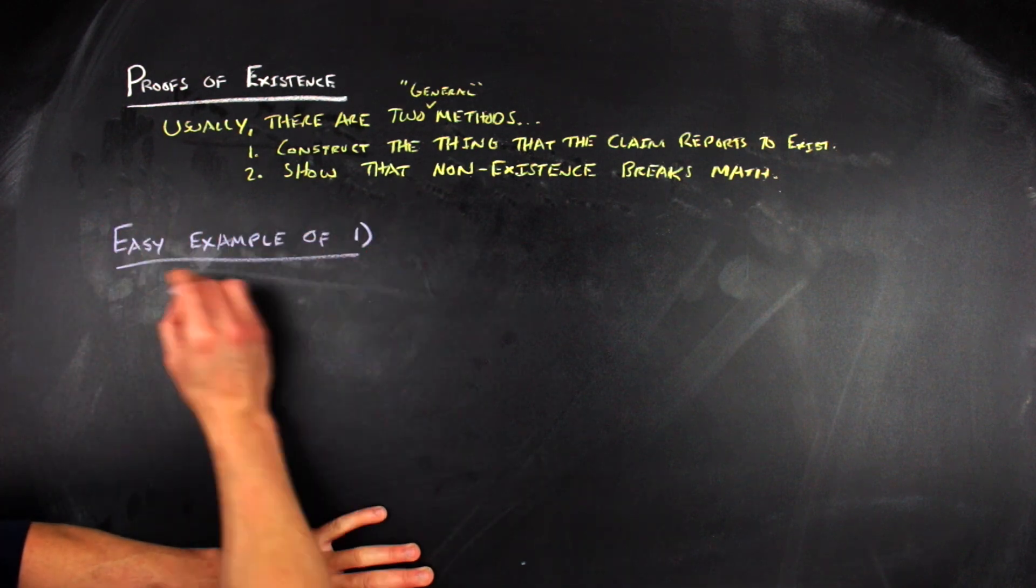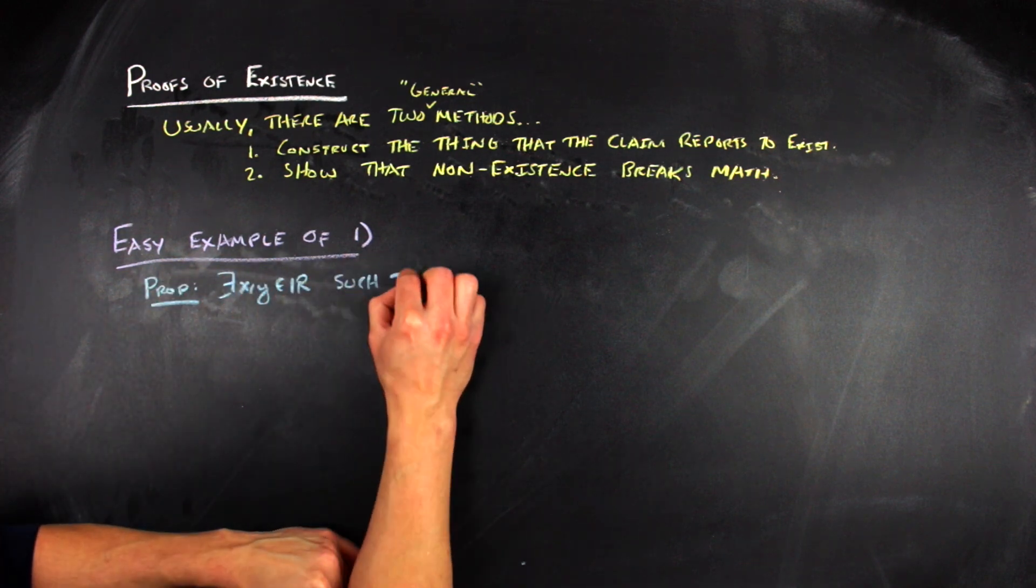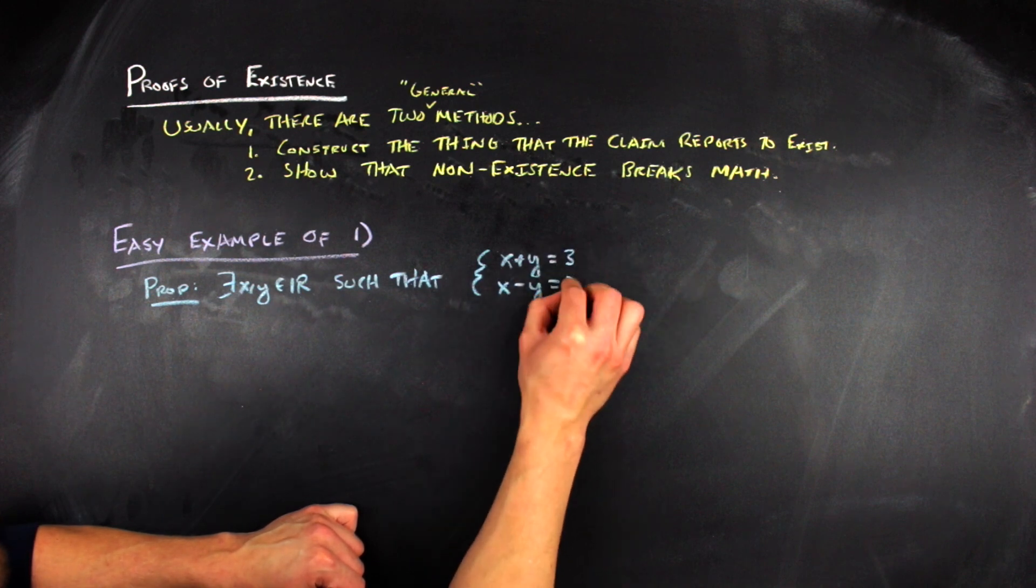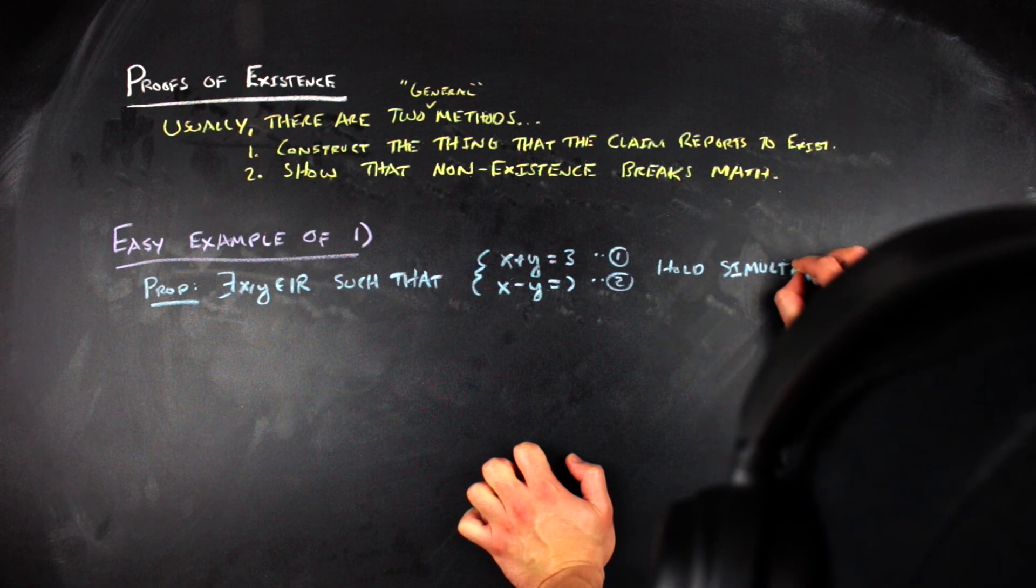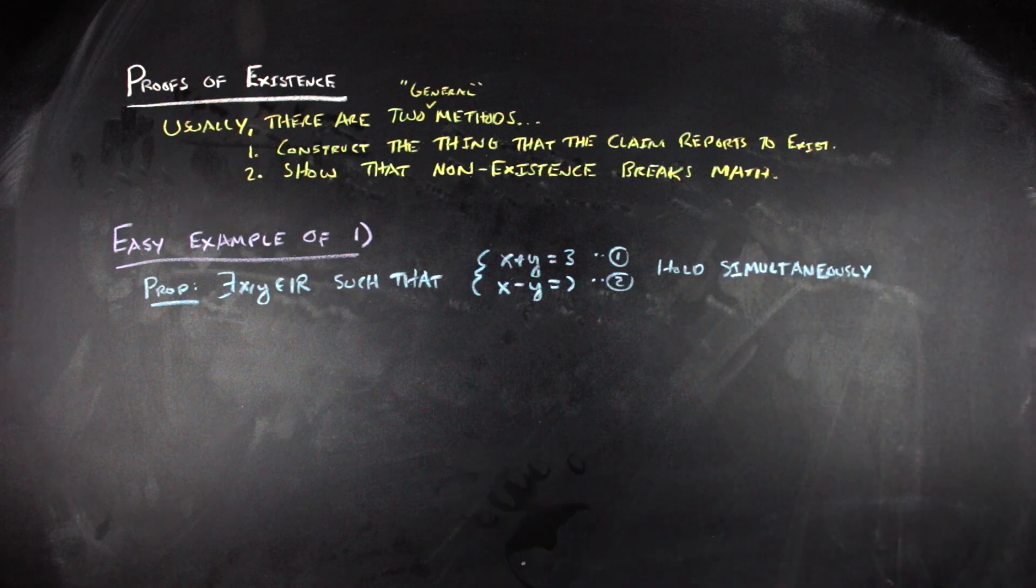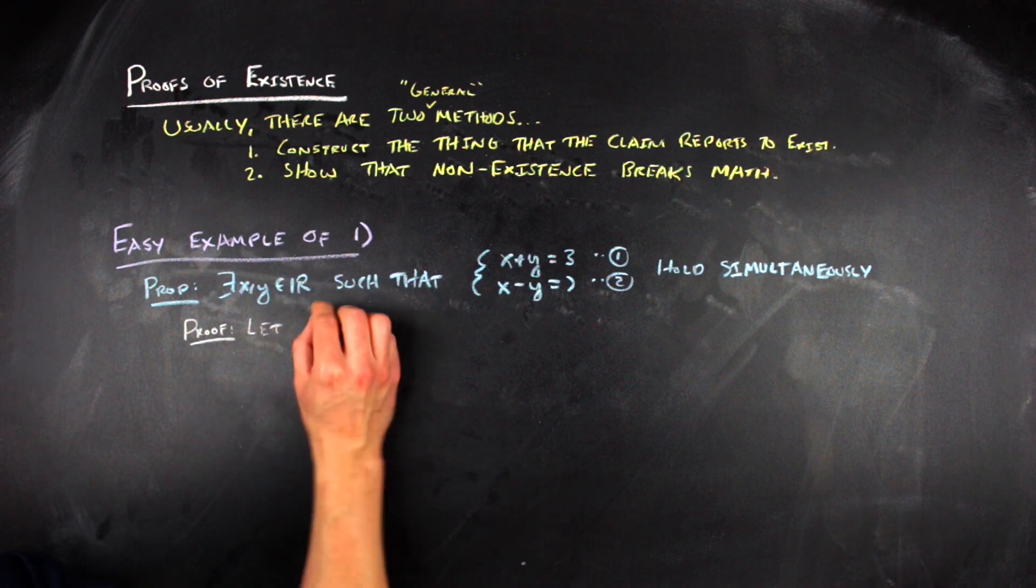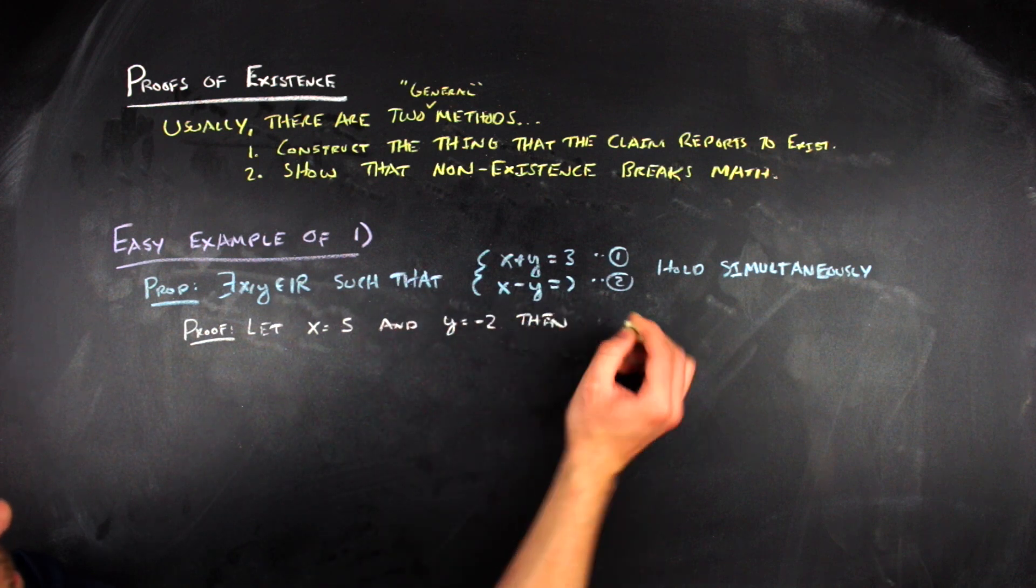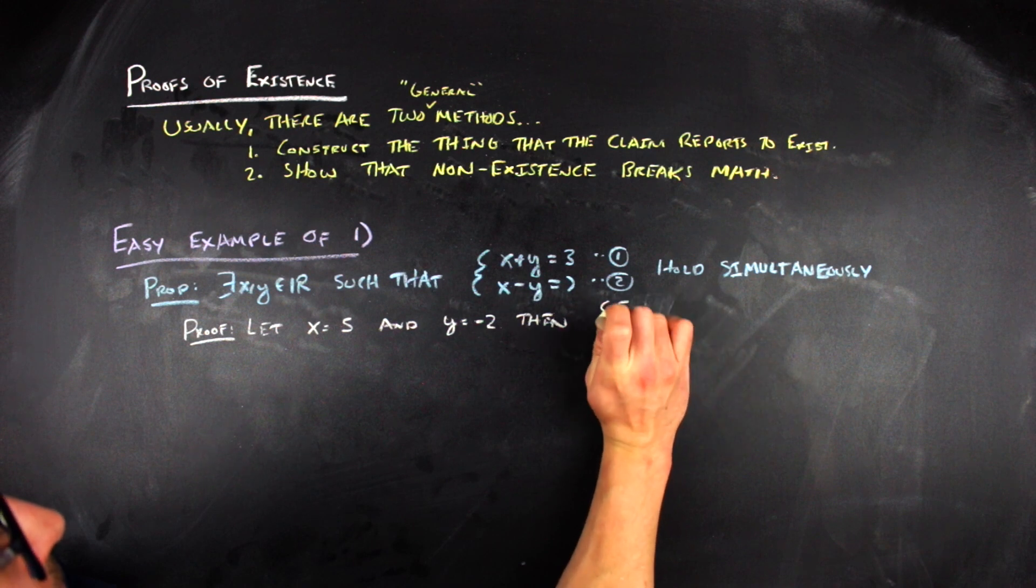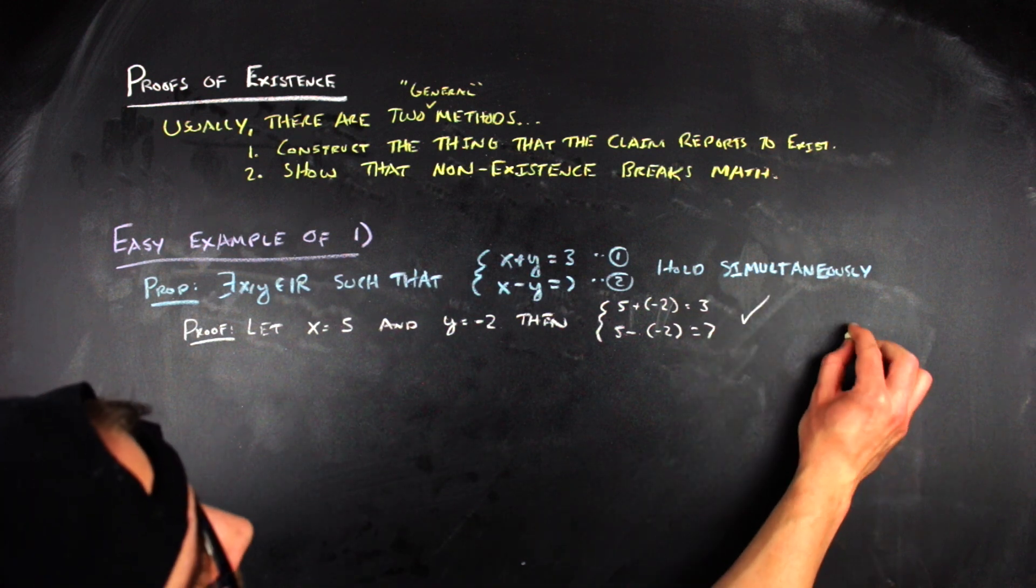So the first one is simultaneous linear equations. The proposition is that there is an x and a y within the real numbers such that the equations x plus y is equal to three and x minus y is equal to seven hold simultaneously. So the proof here is very quick because you can just say, let x equal five and y equal negative two. Then five plus negative two is three and five minus negative two is seven. Hence the equations hold simultaneously for these x and y values.